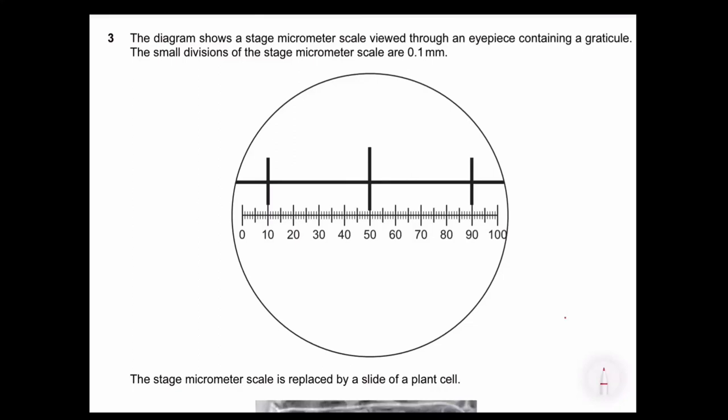Okay, now let's look at a sample question that is common in Paper 1. Usually a diagram is given because you can't be using the microscope to calibrate. So, look for information for the value.